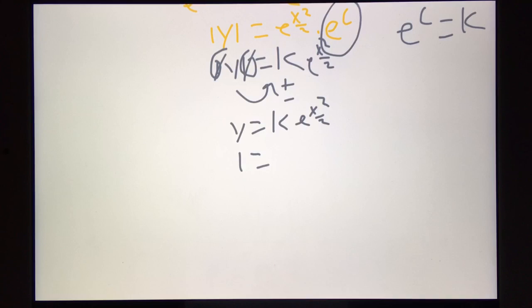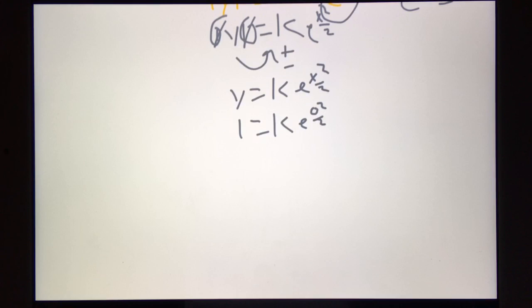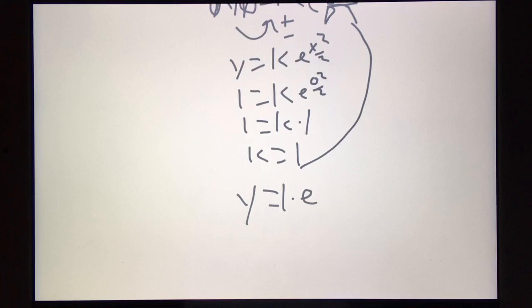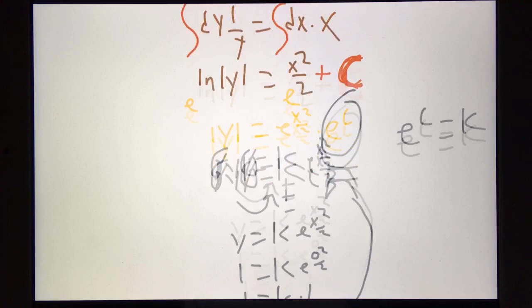Now, since we know that y equals 1, and x equals 0, we can just solve. 0 squared over 2 is 0. E raised to the 0 is 1. So, 1 equals k times 1. And if you have a calculator out, you can figure that k equals 1. Plug that back into our equation. y equals 1 times e to the x squared over 2. And that's the equation of the line at 0, 1.